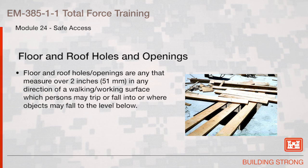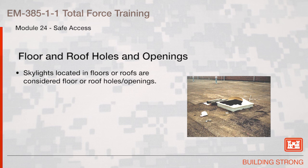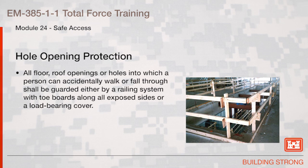Floor and roof holes and openings are any that measure over 2 inches in any direction of a walking/working surface which persons may trip or fall into, or where objects may fall to the level below. Skylights located in floors or roofs are considered floor or roof holes and openings. All floor and roof openings or holes into which a person can accidentally walk or fall through shall be guarded by either a railing system with toe boards along all exposed sides or a load-bearing cover.